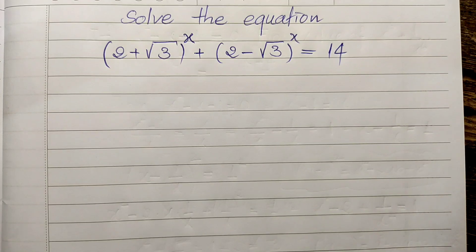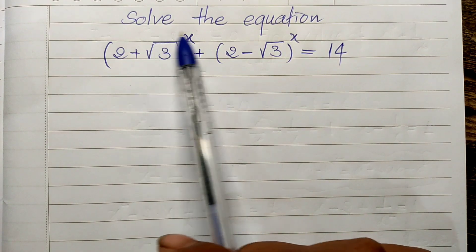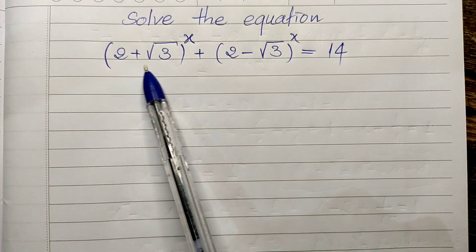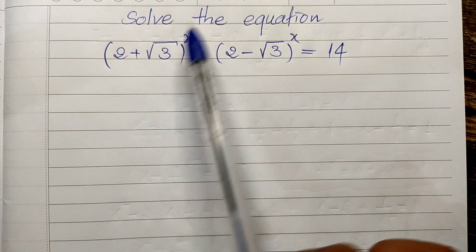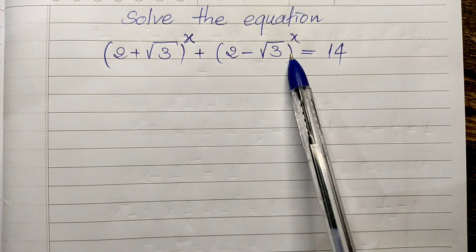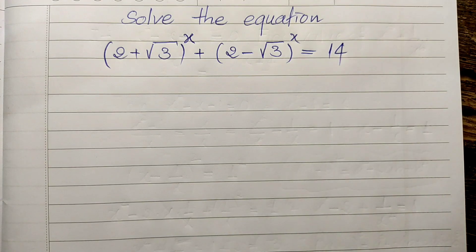Hello everyone, welcome to my YouTube channel. Today I have an exercise — solve this equation on paper. Our equation is (2 plus square root of 3) all to the power 8 plus (2 minus square root of 3) all to the power 8, is equal to 14. Do you know how to solve this? If you know, please do it, then come back to watch my video from beginning to end to verify your solution.